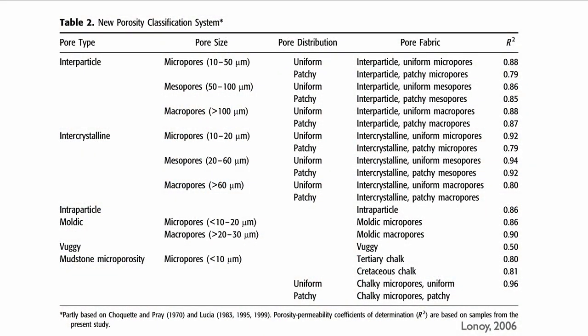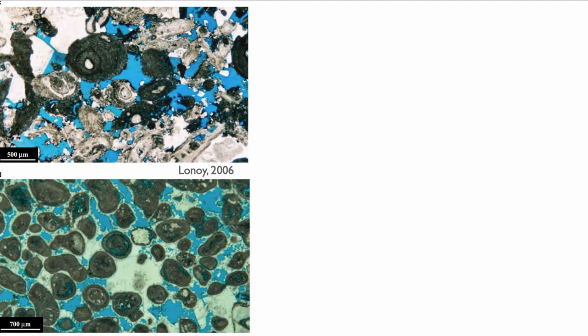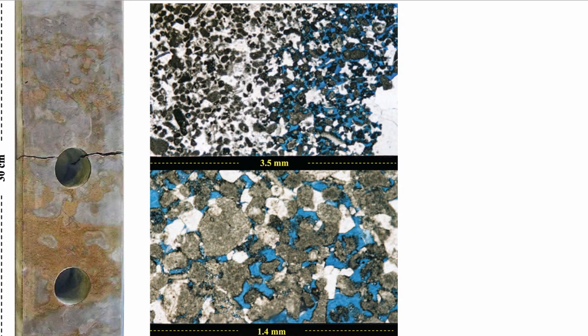Let's look at some examples to cement this understanding of Lenoir. Here we have examples of uniformly distributed macroporosity — two examples, top and bottom. I'll also show an example of mesopores, but these are patchy. You can see that compared to the previous slide, here the porosity is not evenly distributed at the core size or the thin section size.